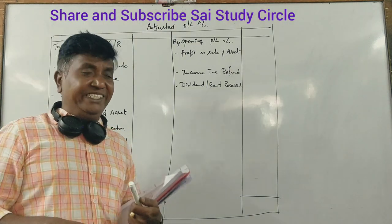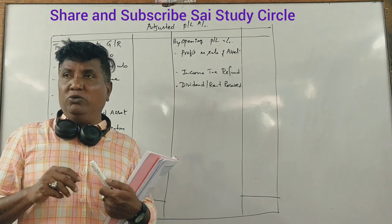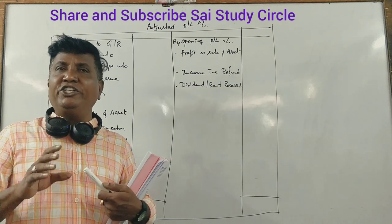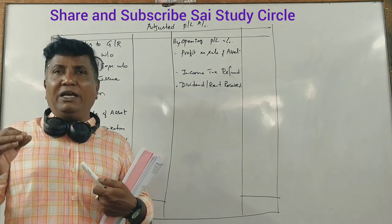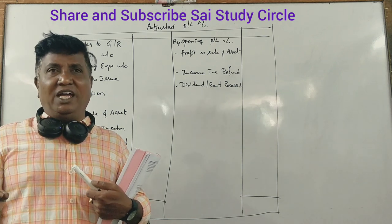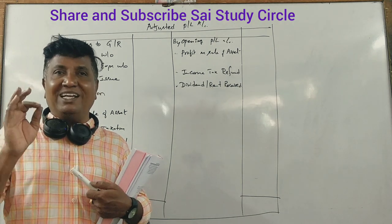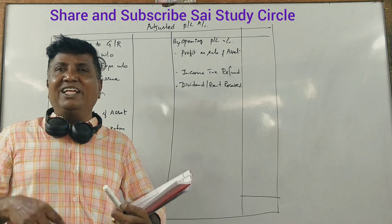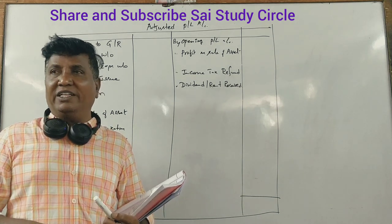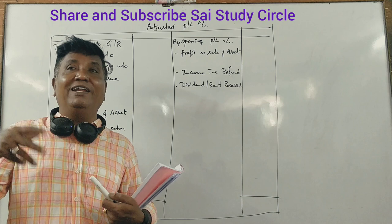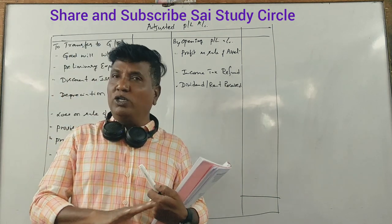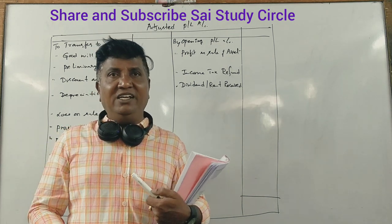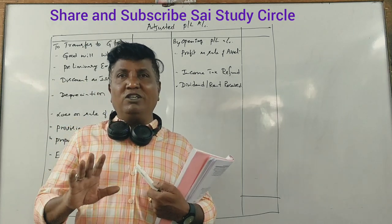We have the adjusted profit and loss account in the model with the fund flow statement. In a company, business profit is not the same as cash. There is a big difference between cash and profit. So rather than just profit and loss, we need to account for non-cash and non-business items, and manage other adjustments accordingly.